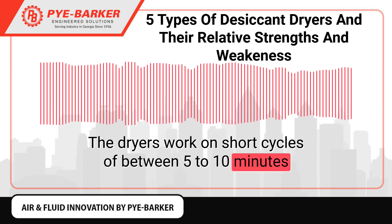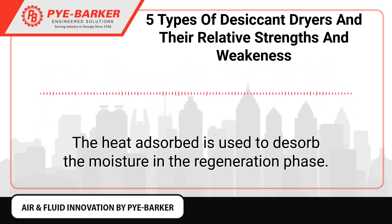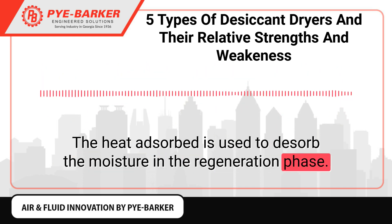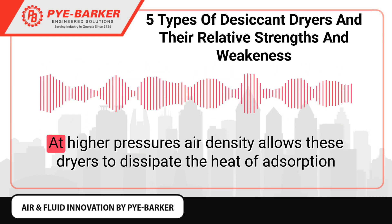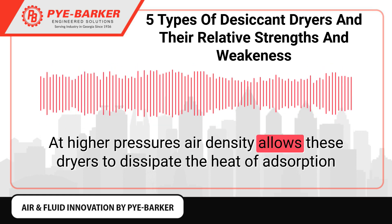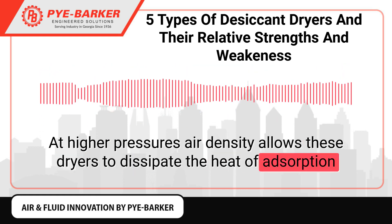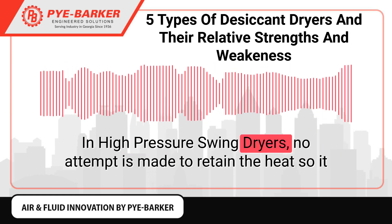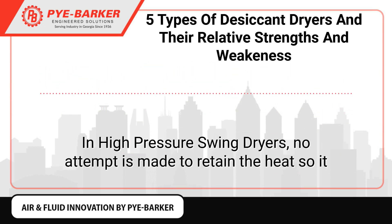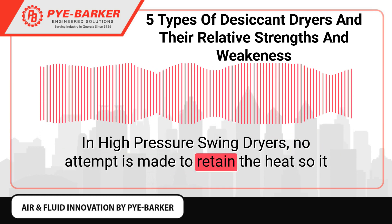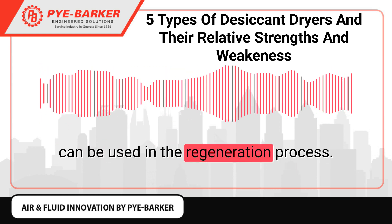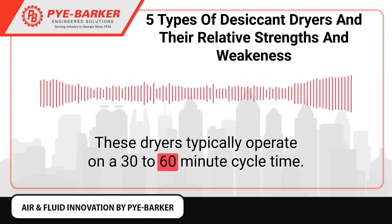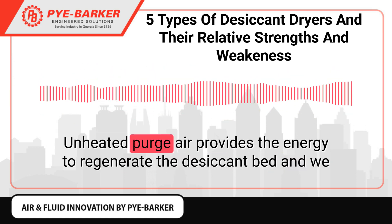These dryers work on short cycles of between five to ten minutes before the vessels are switched. The heat adsorbed is used to desorb the moisture in the regeneration phase. At higher pressures, air density allows these dryers to dissipate the heat of adsorption before the end of the drying process. In high pressure swing dryers, no attempt is made to retain the heat for use in regeneration; these dryers typically operate on a 30 to 60 minute cycle time.